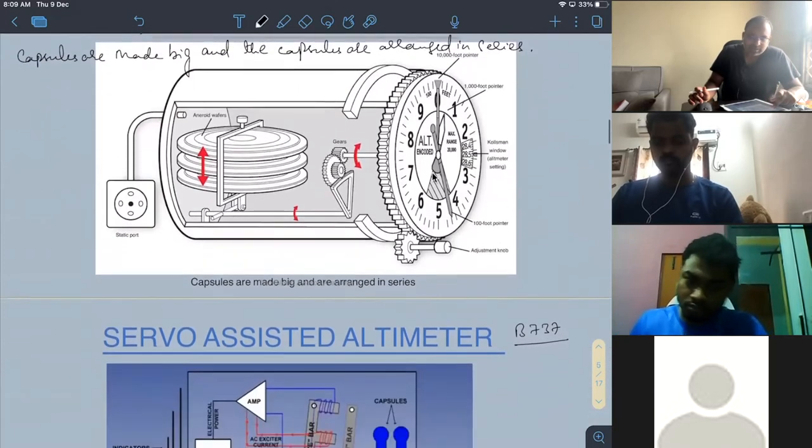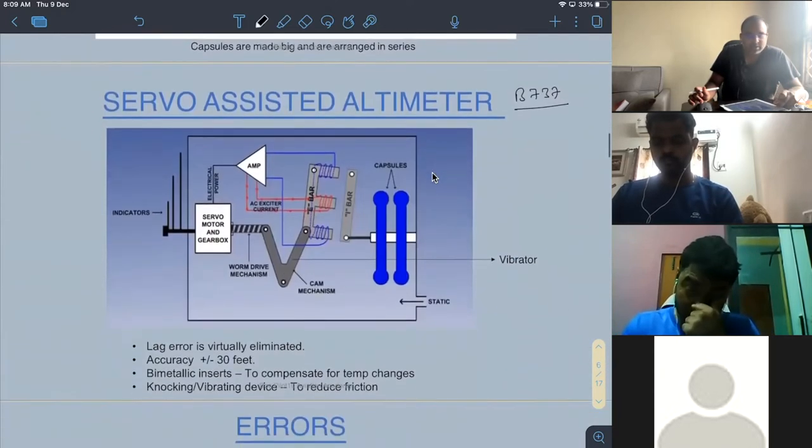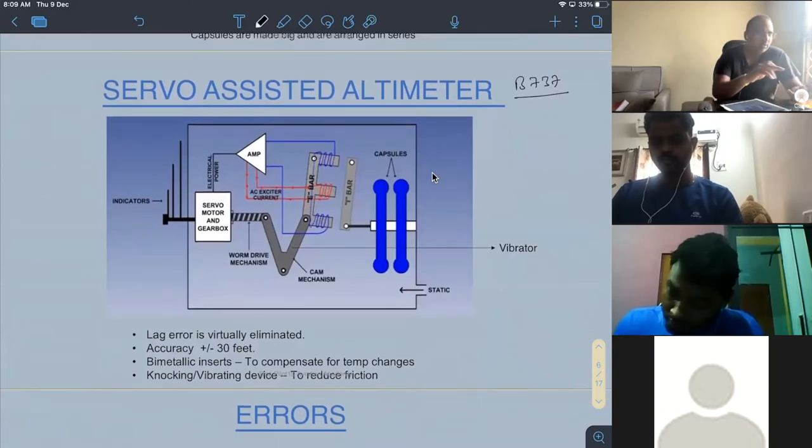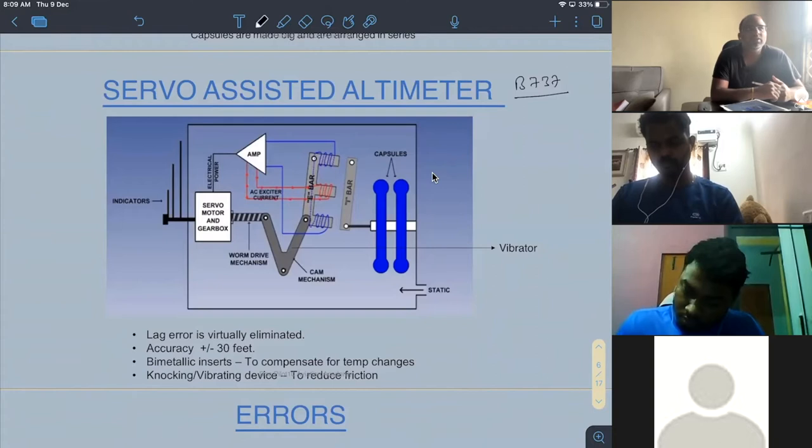So, in all other aircrafts which need very accurate measurements of altitude, they use something called a servo-assisted altimeter. Now, let's see what is servo-assisted altimeter. This is a bit complex. What I'll do, I'll draw my own diagram.